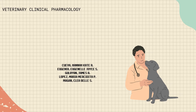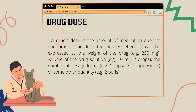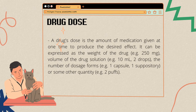Drug dose calculation. A drug's dose is the amount of medication given at one time to produce the desired effect. It can be expressed as the weight of the drug, volume of the drug's solution, the number of dosage forms, or some other quantity.